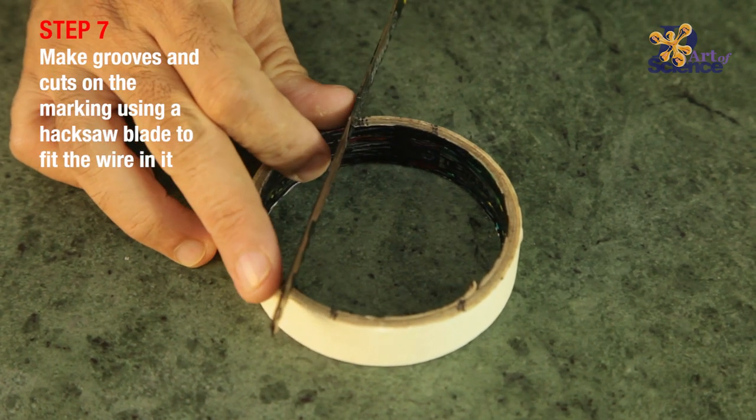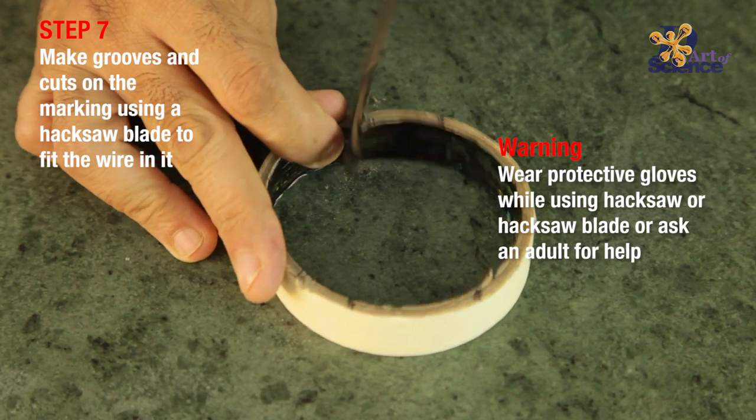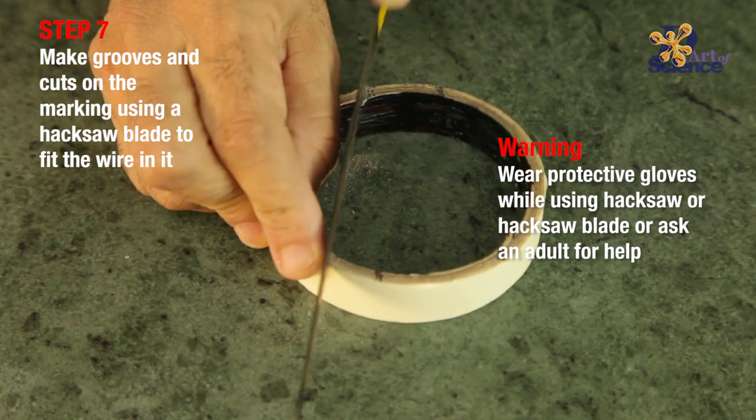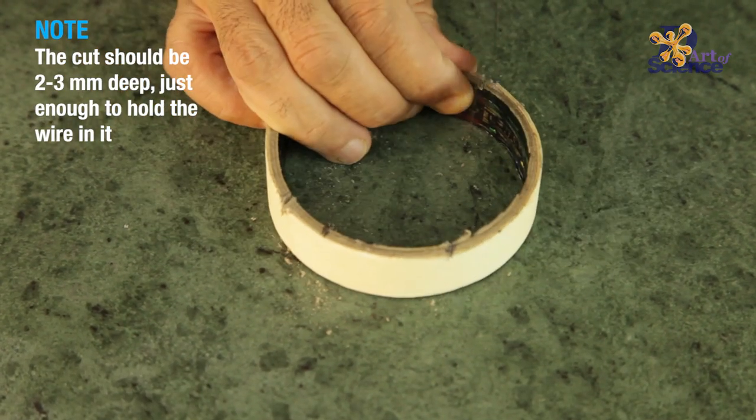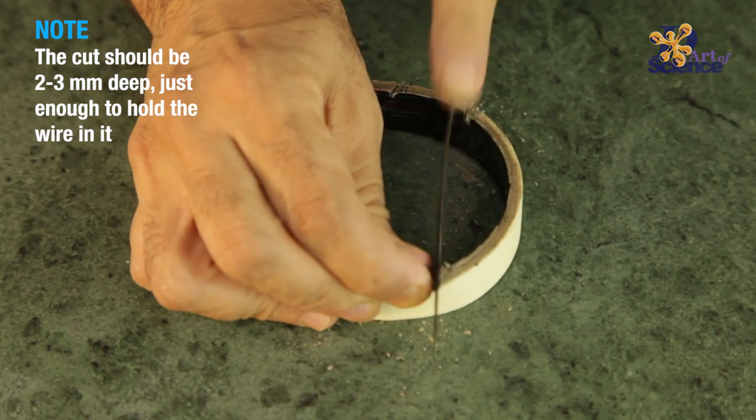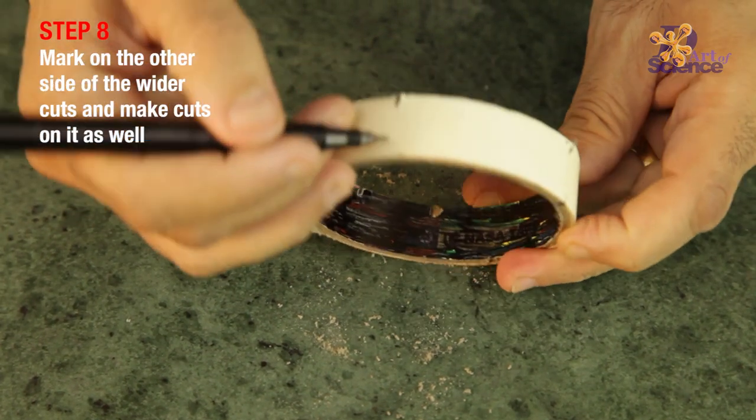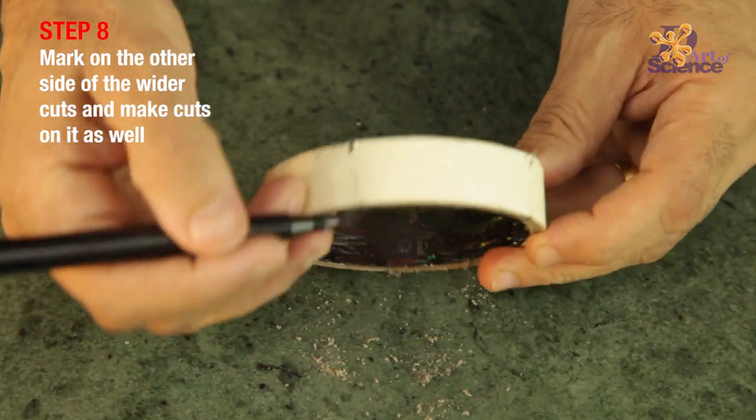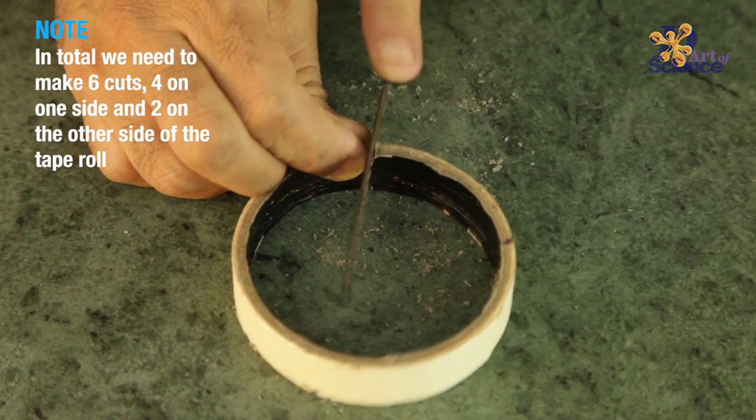Now you need to make grooves and cuts on the marks, and that is to put the wire inside. Use a hacksaw or just a hacksaw blade to do that. The cut just needs to be about 2 or 3mm deep, just enough for the wire. On the other side of the wider cuts, mark and cut there as well. So in effect, you need to make 6 cuts.